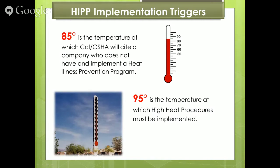Let's look again at the implementation triggers: 85 degrees is the temperature at which Cal OSHA will cite a company that does not have and implement a heat illness prevention program, and 95 degrees is the temperature at which the high heat procedures must be implemented.